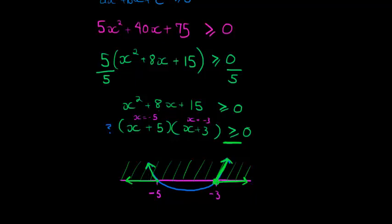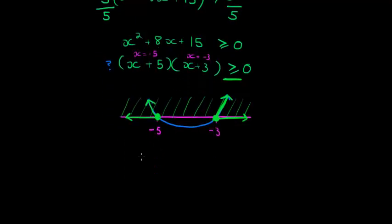They're not included. Sorry, they are included. So it's solid dots. They are included. And now I can just read it off here that x is smaller than negative 5 or x is larger than negative 3.